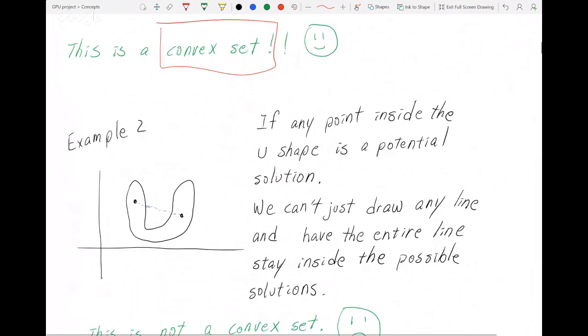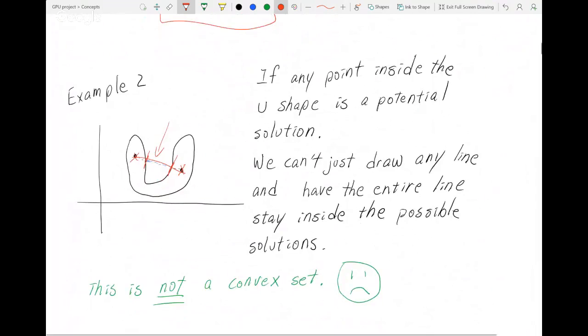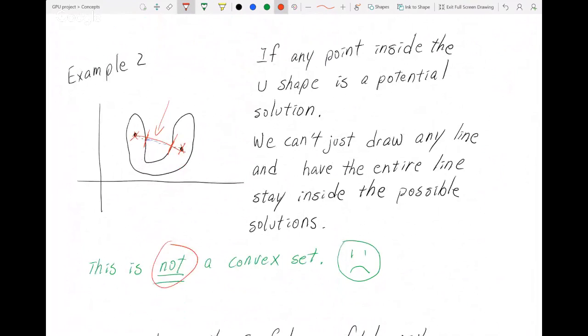If we have another set of solutions, let's say the set is like a U. You can pick two points and draw a line that's still inside the U completely, but not for any two points. It's possible to pick these two points, and notice how this portion is outside the realm of possible solutions. So this is not a convex set. The universal symbol for that is a sad face, mostly because convexity makes life so much easier.